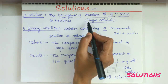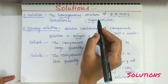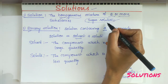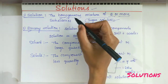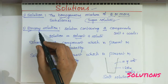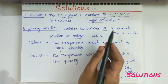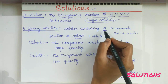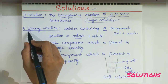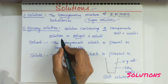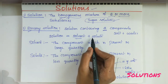For example, take sugar solution — sugar dissolved in water. The sugar is uniformly distributed in water, so it is homogeneous. Next, binary solution: a solution which contains two components is called a binary solution. Here 'bi' indicates two.